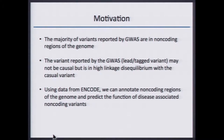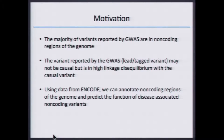Additionally, a lot of the variants reported by GWAS aren't necessarily causal — they may just be in high linkage equilibrium with a causal variant. We really want to understand how these changes in base pairs are contributing to disorders and dysregulation of possible genes. We can use data from ENCODE to annotate non-coding regions and predict the function of disease-associated non-coding variants.